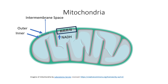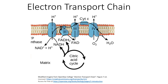Now there is only one electron transport chain shown in this image, but there would be many of these embedded throughout the inner membrane of this one mitochondrion. Here we can see one electron transport chain within the inner membrane of one mitochondrion.